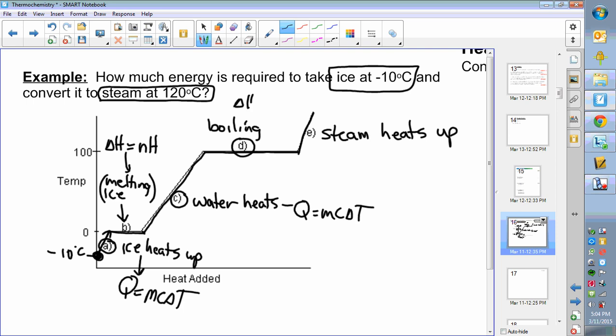Boiling is a phase change, it's an enthalpy change—delta h equals n h. And steam heating up is q equals mc delta t. So we have different formulas in each section that we need to work out, and we're going to have to pay attention as we move around from one formula to the other. The only thing missing in this example question is we don't have a mass given, so let's say that the mass of ice is 15 grams that you're dealing with.